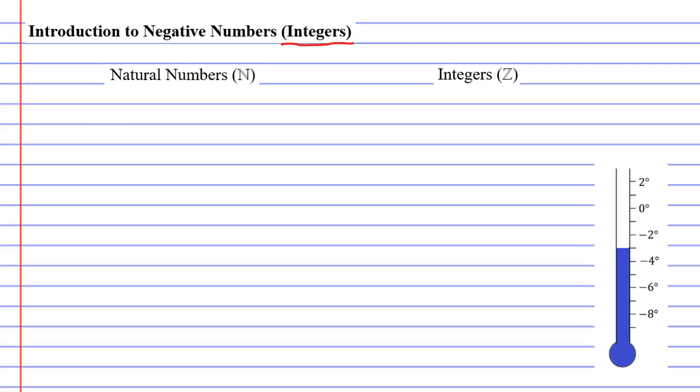First thing we need to do is actually talk about what are called the natural numbers. Now the natural numbers are also known as the counting numbers. And these numbers are your 1, 2, 3, 4, 5, and so on. They're the numbers you use to count things.